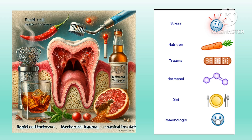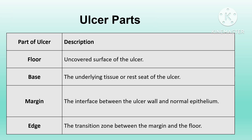The oral cavity is prone to ulcers due to its rapid cell turnover, exposure to mechanical trauma, and contact with irritants like spicy foods, alcohol, or tobacco. Additionally, diverse microbes, stress, and nutritional deficiencies can trigger ulcer formation. These factors collectively weaken the mouth's mucosa, making it more vulnerable to ulcers.